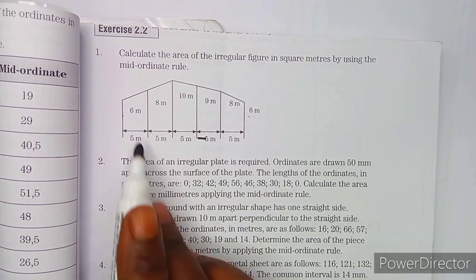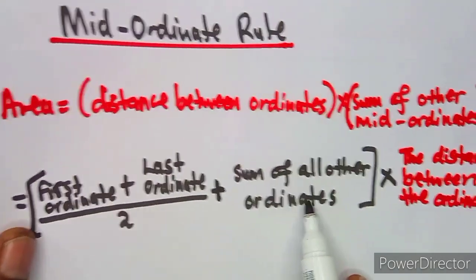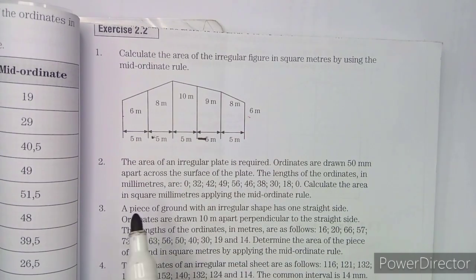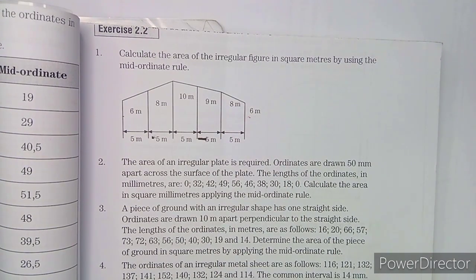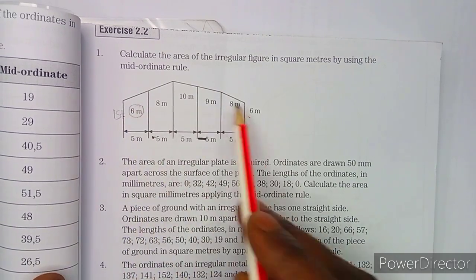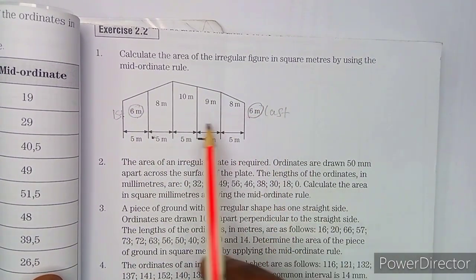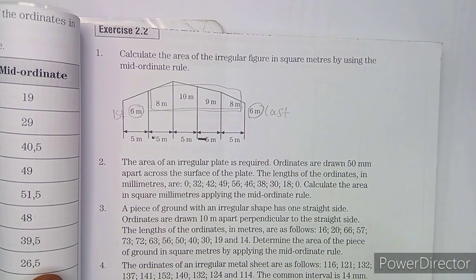As we can see on the formula, there is the part for the ordinates and there is the part for the distance between the ordinates. This distance of 5 is the one I am talking about. So this is your first ordinate and this is your last ordinate, and the remaining ones are those in between.